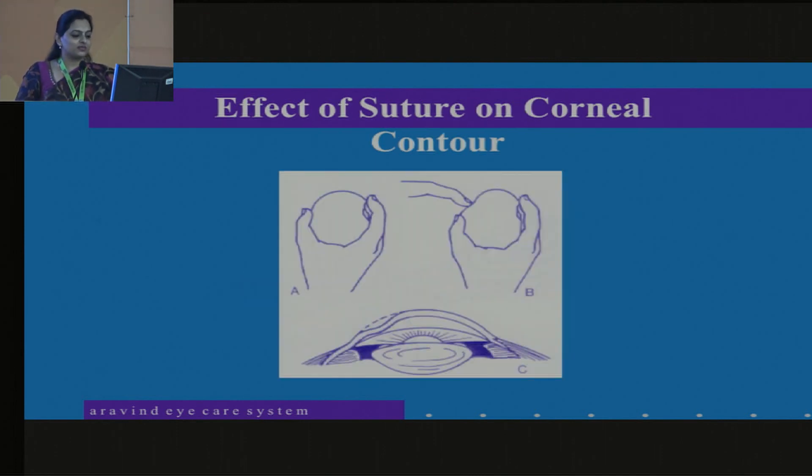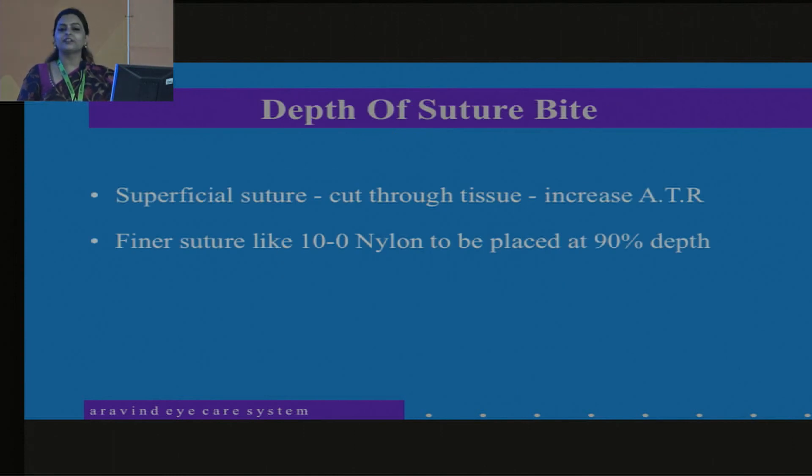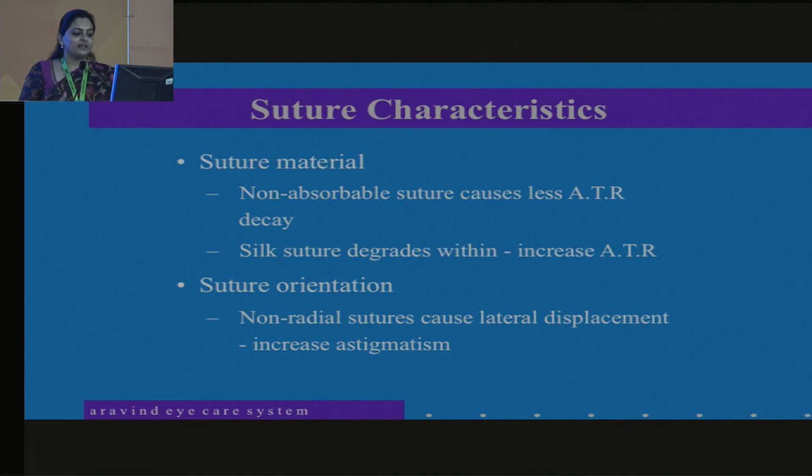This is just a picture to depict it. And depth of suture, always make sure you take it at least 90% depth. Too superficial will cut through the tissue and thereby cause astigmatism. Non-absorbable sutures will cause lesser astigmatic, less against-the-rule decay. And suture orientation, they should always be radial.